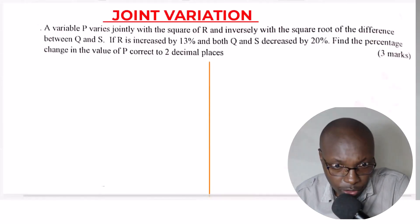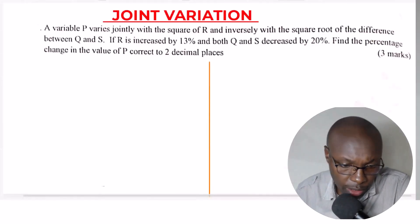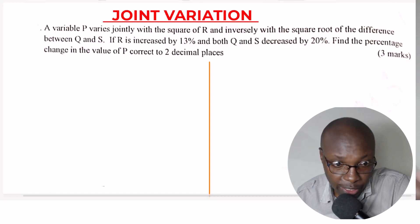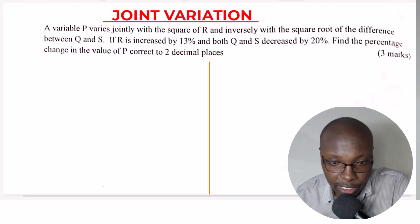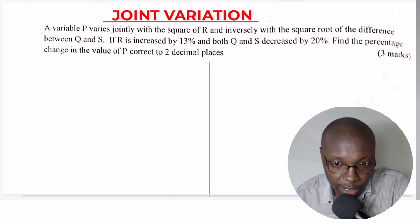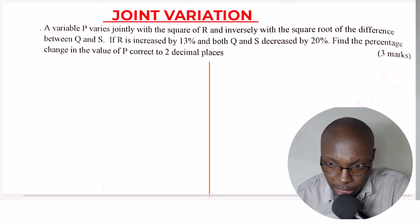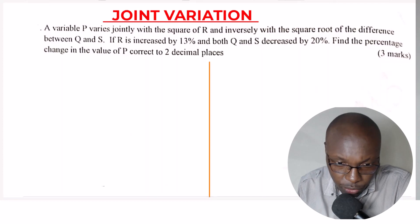Let's solve this question on joint variation. The question reads: a variable P varies jointly with the square of R and inversely with the square root of the difference between Q and S. If R is increased by 13 percent and both Q and S are decreased by 20 percent, find the percentage change in the value of P corrected to two decimal places. Let's go to the solution.